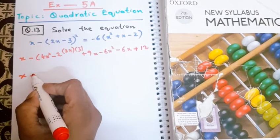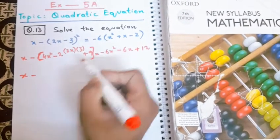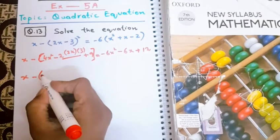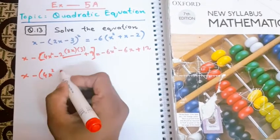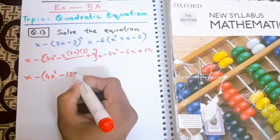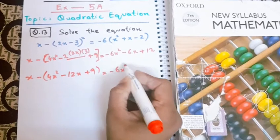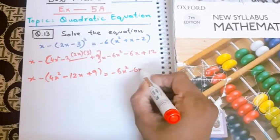Okay, hold on. Now I'm not opening the bracket right now because I need to solve these two things. 4x² - 2 times 2x times 3 is 12x + 9 - 6x² - 6x + 12.